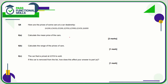Question six is a calculator question. For the mean price of the cars we add all of these figures together, which comes to a grand total of 28,350, and we divide by 7 cars. 28,350 divided by 7 comes to 4,050.